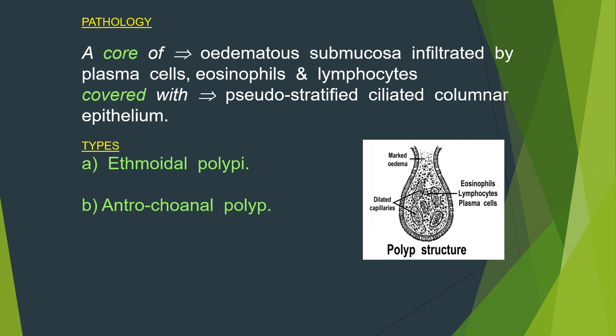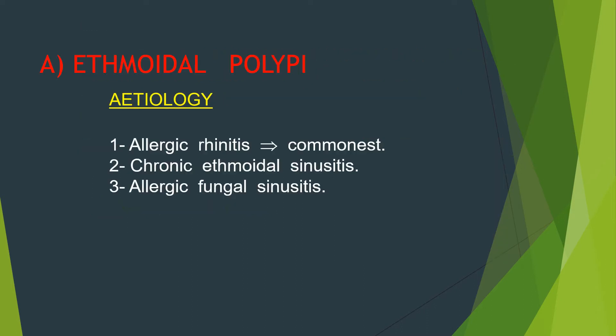The types are ethmoidal polypi and antrochoanal polyp. Ethmoidal polypi usually happen in allergic rhinitis, which is the commonest cause; chronic ethmoidal sinusitis due to infection; and allergic fungal sinusitis.